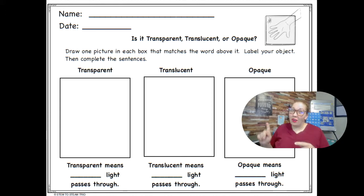Yesterday we learned about transparent, translucent, and opaque. Today we're going to think of some examples.